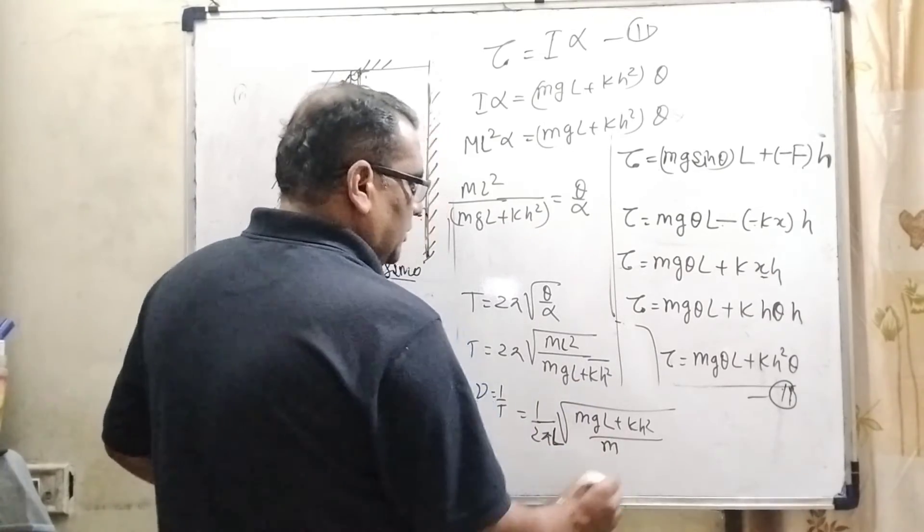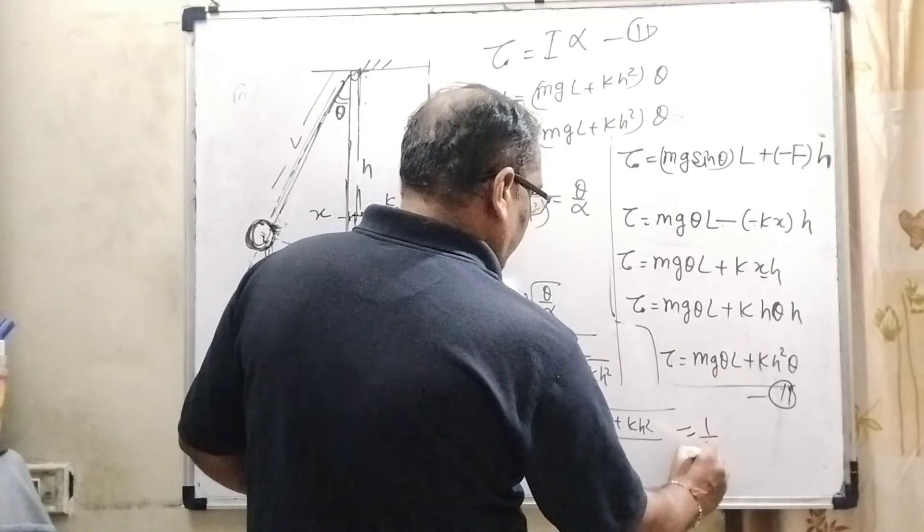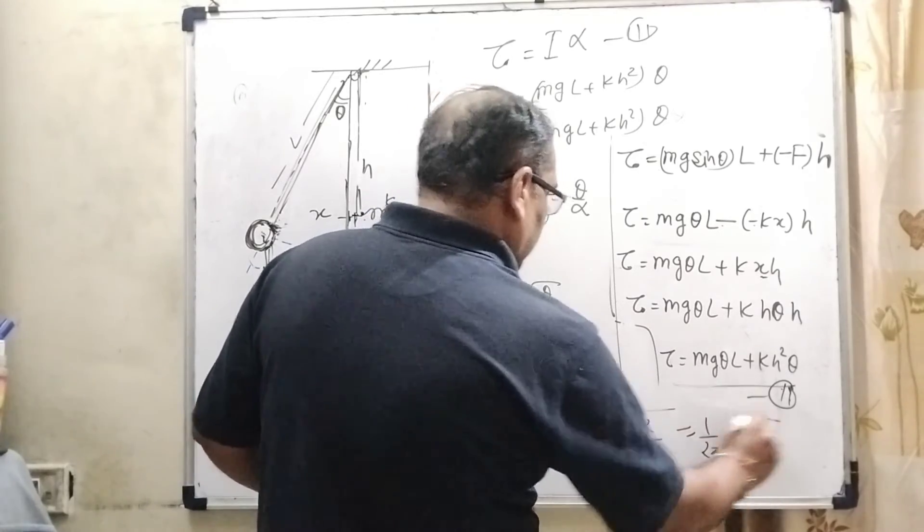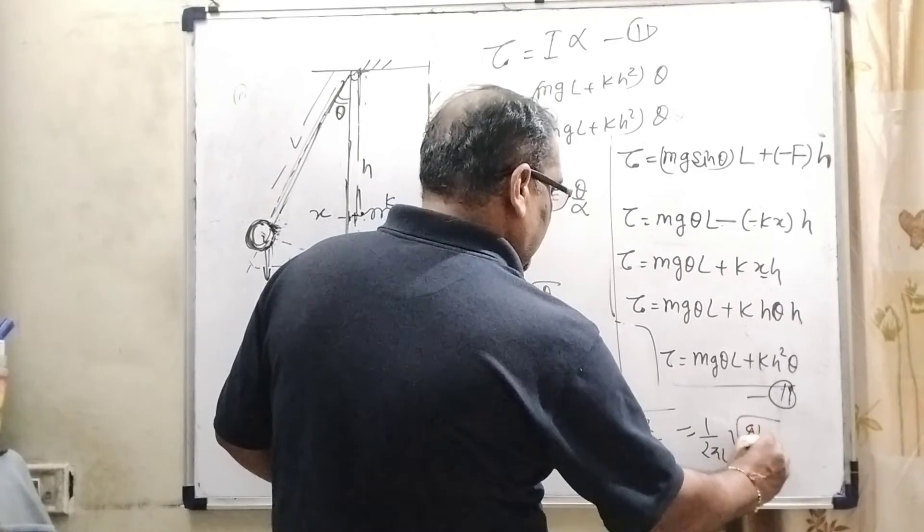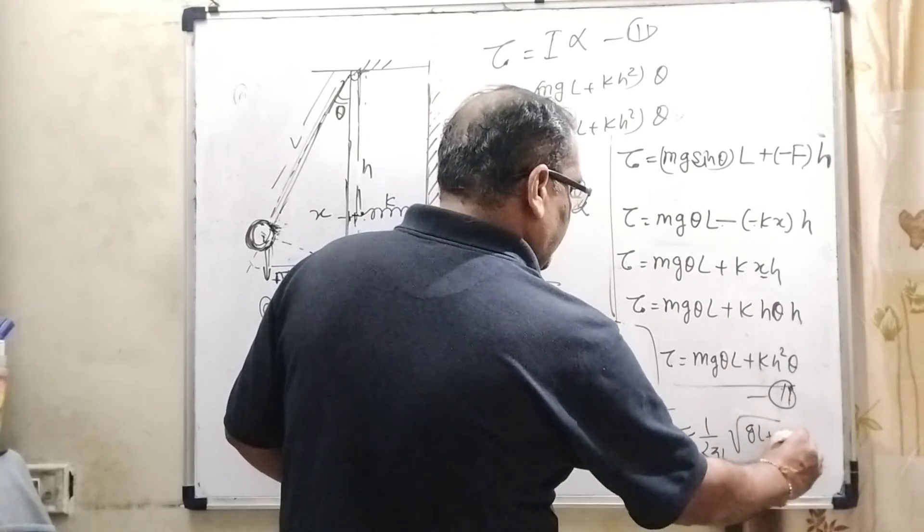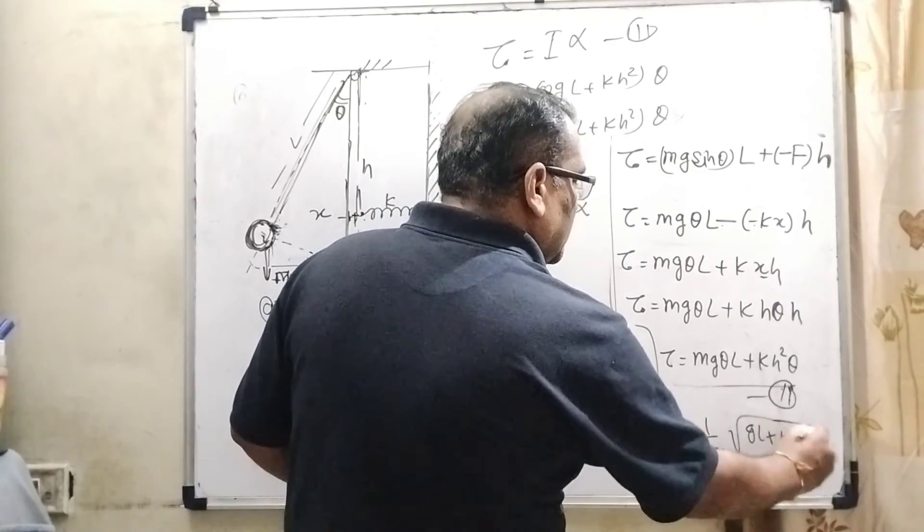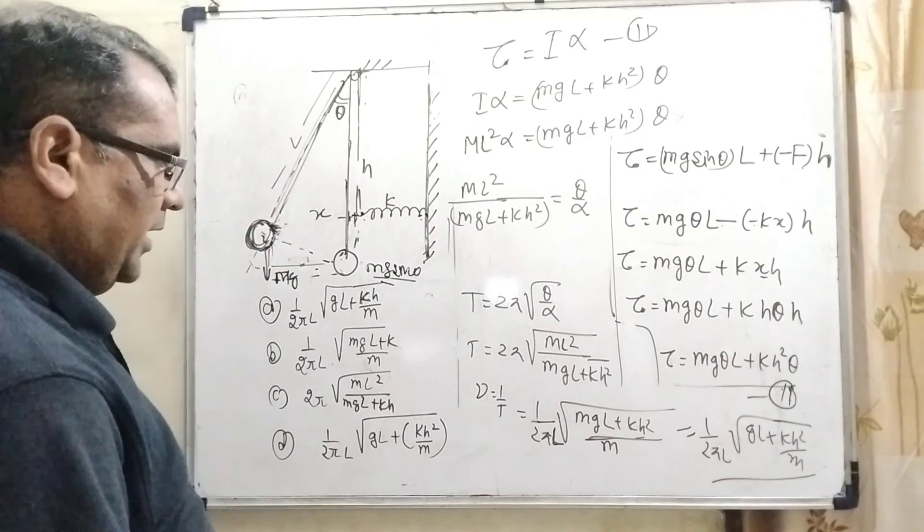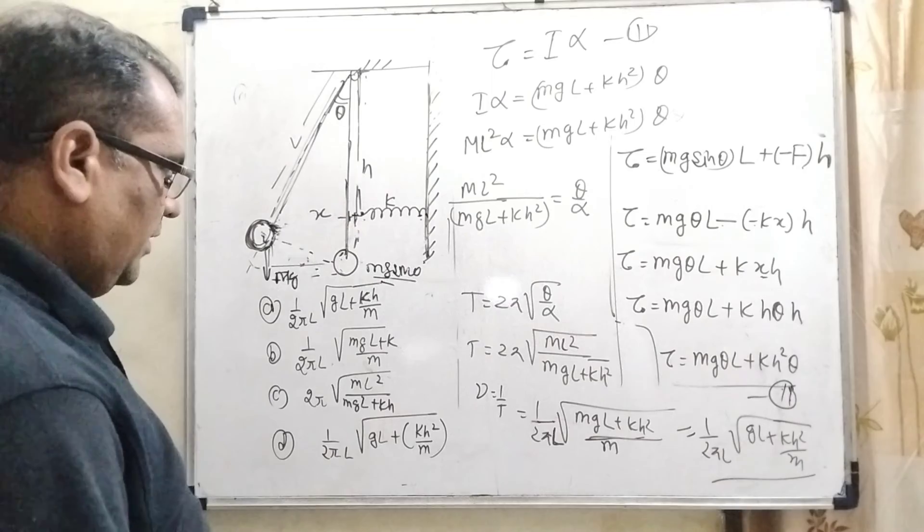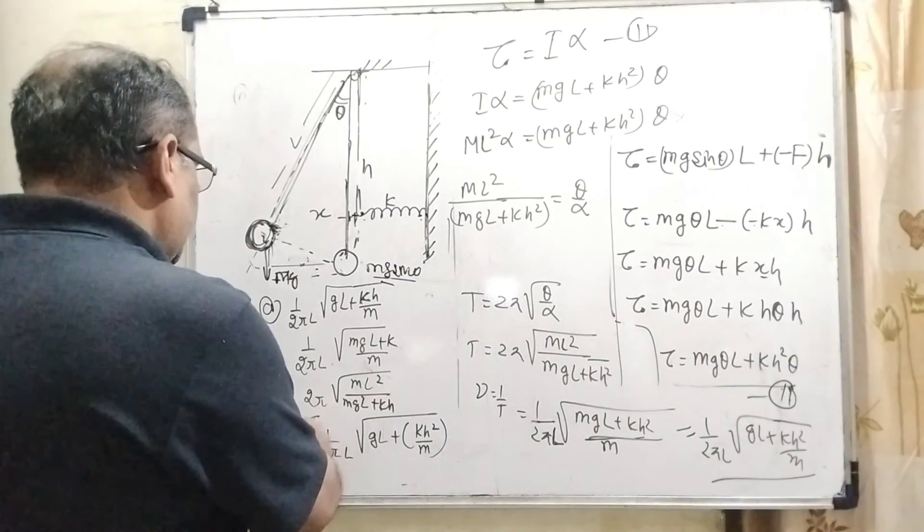Now, here M. So, 1 by 2 pi L, here separated this M, then GL minus KH square upon M. So, let's see which option is matched here. 1 by 2 pi L, GL plus KH square upon M. That is D option is correct.